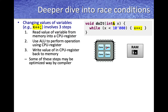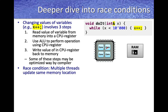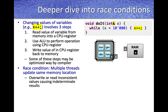Some of these steps may be optimized away by the compiler, but in this example assume all three basic steps occur. The issue in a race condition is that multiple threads try to update the same variable x, and the result is some inconsistent values being stored into x — the threads are stepping on each other's toes trying to modify the same variable, causing incorrect results to be stored back into x. This is called a race condition.